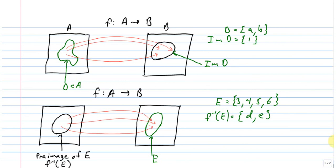So the sets that we associate with a function most naturally are the domain, the codomain, the image of a set in the domain, or the pre-image of a set in the codomain.